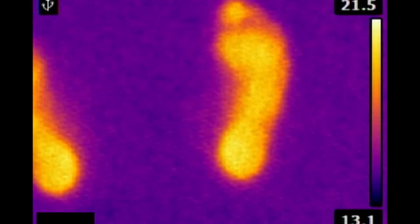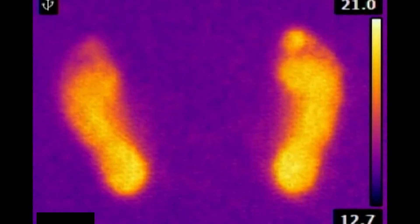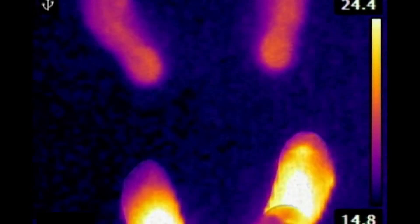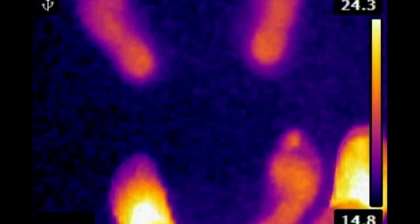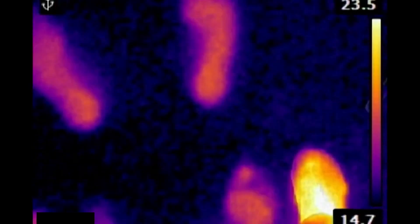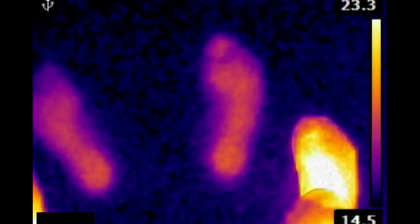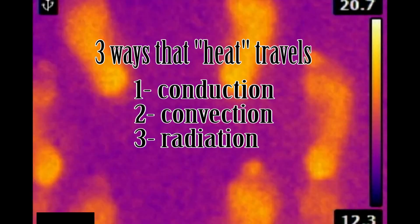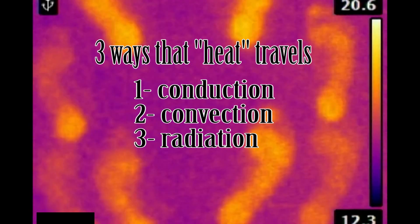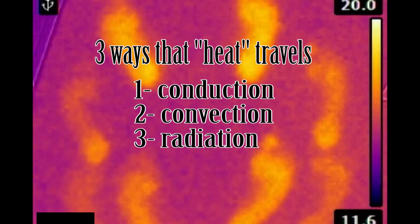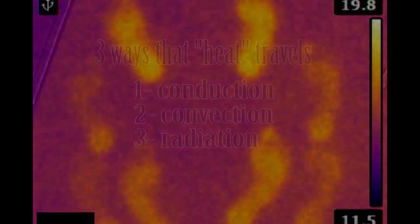Heat is a form of energy. It appears in some chemical reactions or places where electrical, magnetic, or physical friction occurs. Heat travels in three ways: through conduction, convection, or radiation, like from the sun that shines on you.